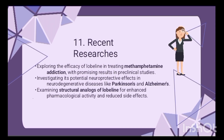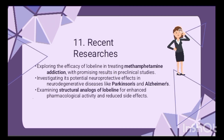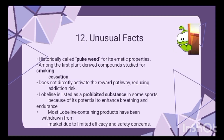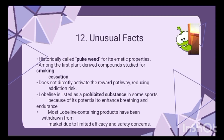Despite not being widely used today, research on Lobeline continues — for example, treating methamphetamine addiction, addressing neurodegenerative diseases like Parkinson's and Alzheimer's, and examining structural analogs for better future drugs. Interestingly, Lobeline has been nicknamed 'puke' due to its emetic properties, has been listed as prohibited in sports, and was withdrawn from the market because of its inefficacy.